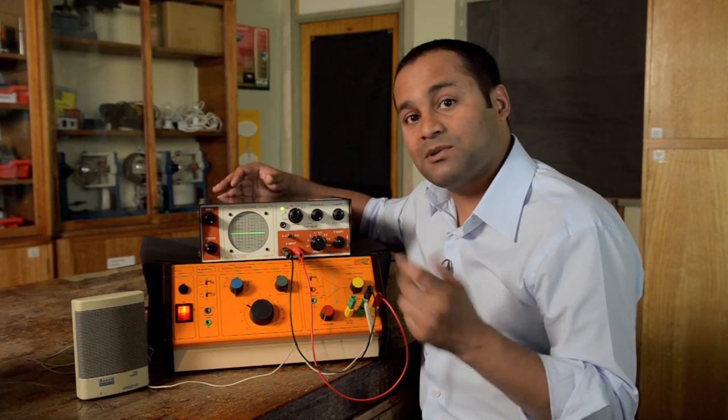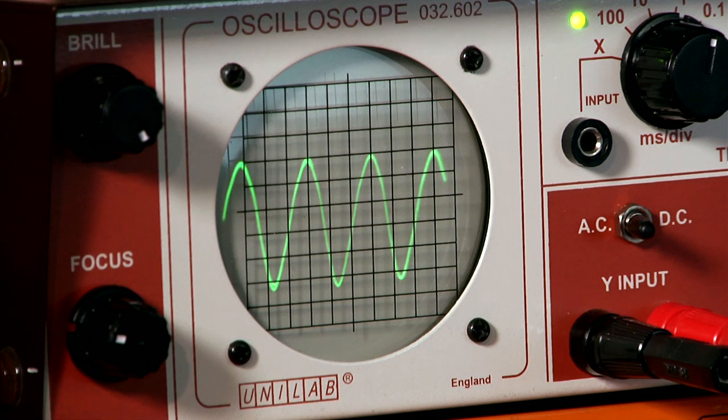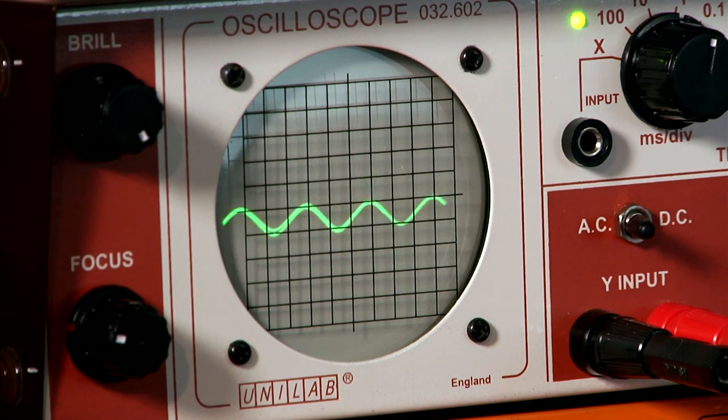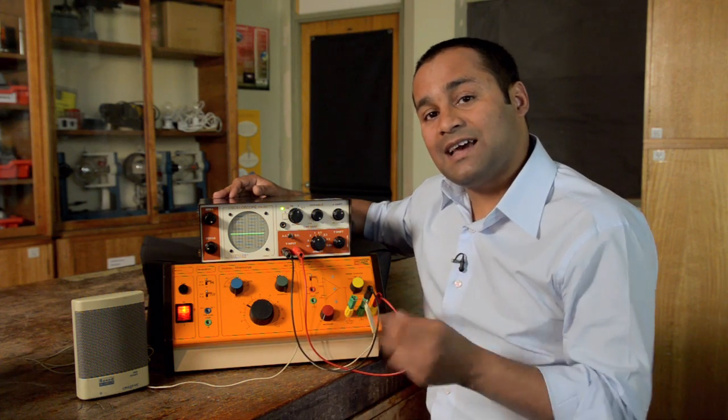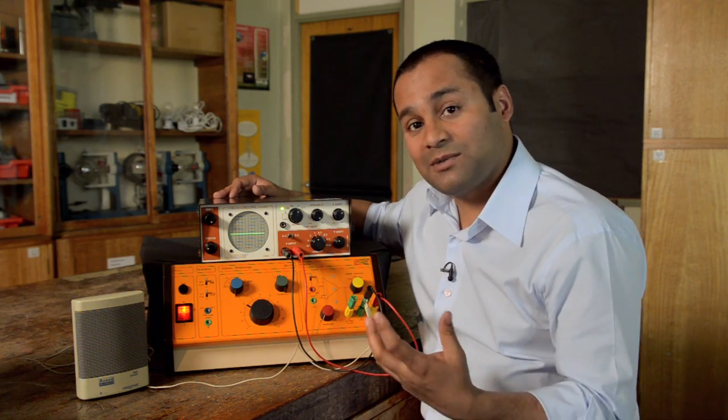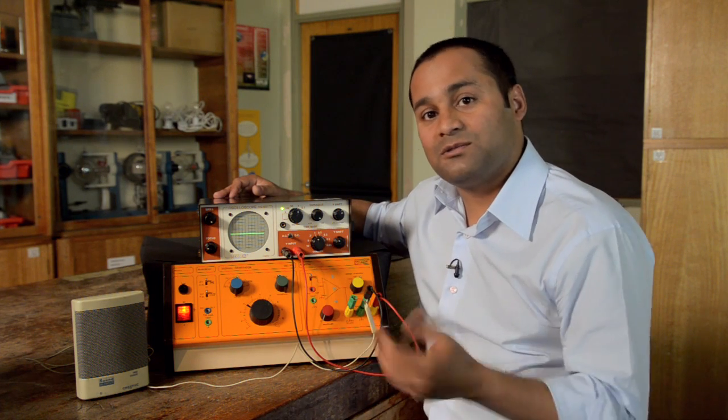Let's see what happens when I change the amplitude. You can see that as I increase the amplitude, the amplitude of the trace on the oscilloscope increases. When I decrease the amplitude, the amplitude of the trace also decreases.